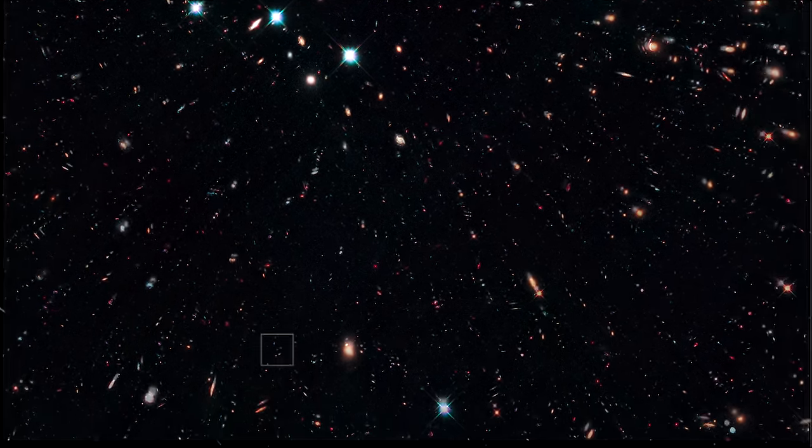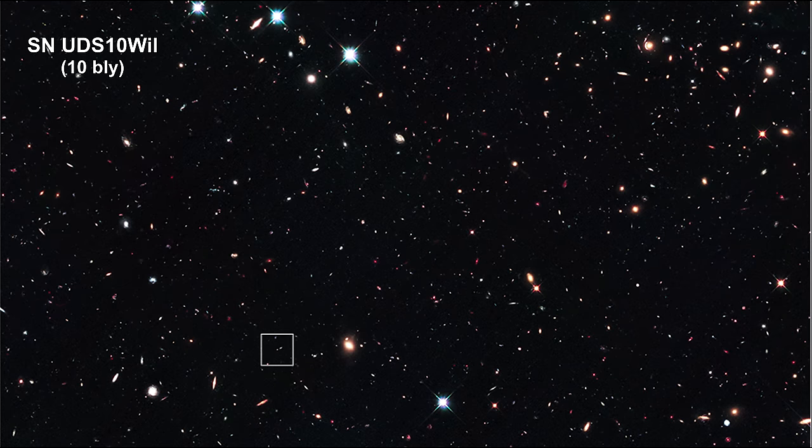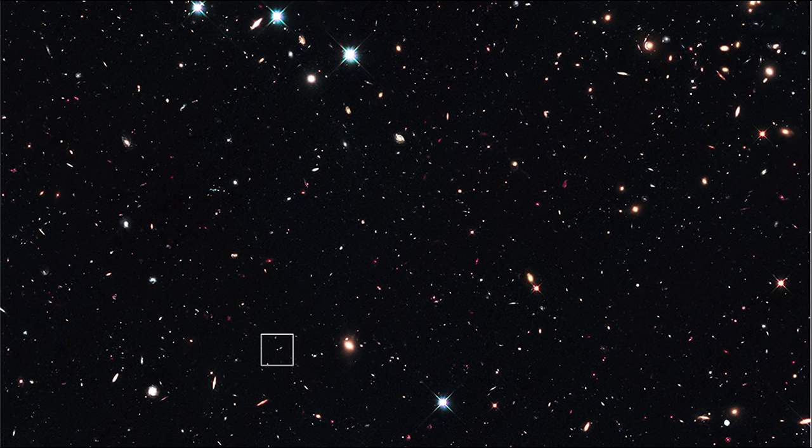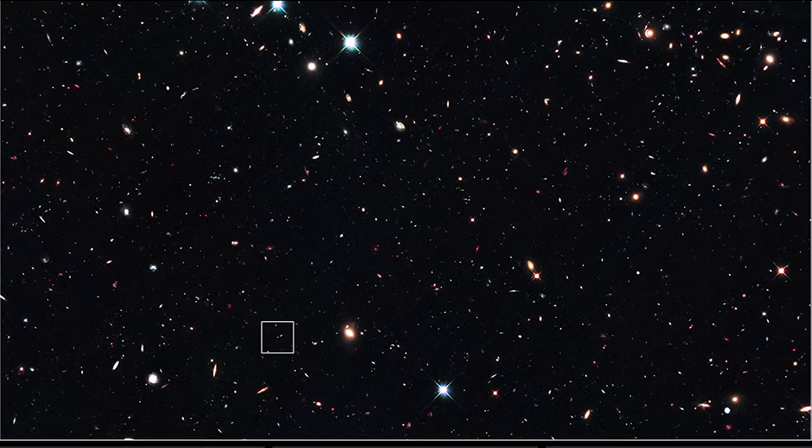In 2013, Hubble broke the record in the quest to find the furthest Type Ia with the discovery of SN UDS-10WIL, a supernova that exploded more than 10 billion years ago, at a time when the universe was in its early formative years and stars were being born at a rapid rate.